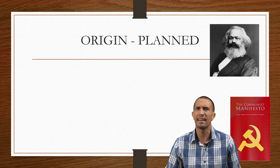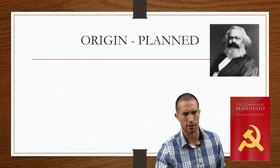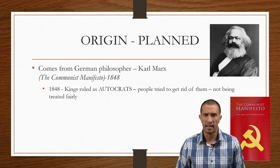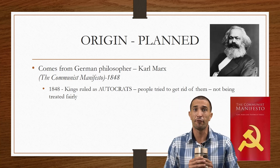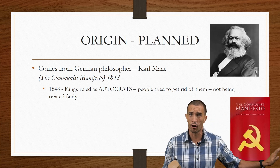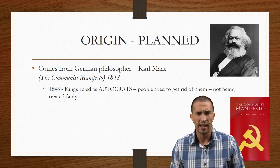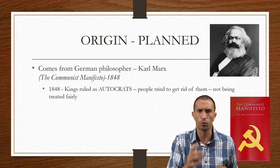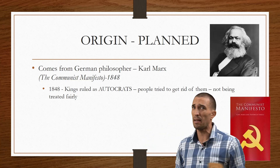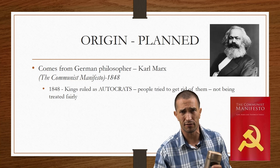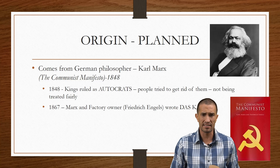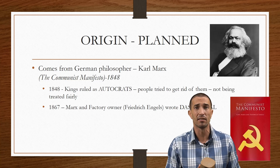So where did the planned economic system start? It started with a man called Karl Marx, who wrote the book 'The Communist Manifesto' in 1848 — after the free market economy had already begun. This was an era when kings ruled as autocrats, saying 'you will do this, you will do that,' and people grew tired of them but couldn't remove them.